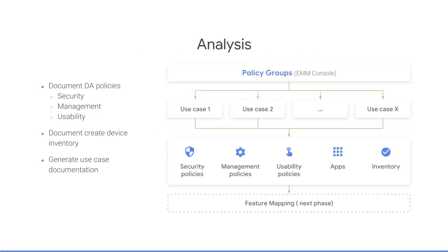In the analysis phase, take a look at your current deployment. Document any policies you're currently using through Device Admin, and create a device inventory paying particular attention to what OS version each device is running and which devices would likely be updated to Android's 2019 release. Create documentation for your current use cases and any use cases that could not be previously handled by Device Admin. The goal in this analysis phase is to create a document that provides enough information to understand which features need to be implemented in Android Enterprise.